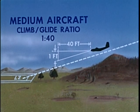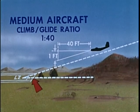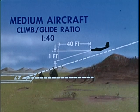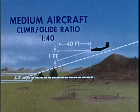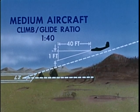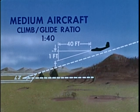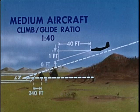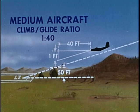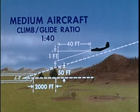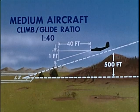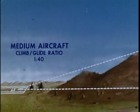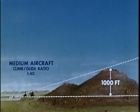All heights of obstacles are computed from the level of the landing zone. Distances are computed from the nearest end of the landing zone. Approach clearances from the approach end, and takeoff clearances from the takeoff end. Based on the climb-glide ratio for medium aircraft of 1 to 40, no obstruction higher than 6 feet and closer than 240 feet is permitted. A 50-foot obstruction may not be closer than 2,000 feet. A 500-foot obstruction may not be closer than 4 nautical miles. Hills of 1,000 feet or more may not be closer than 8 nautical miles.